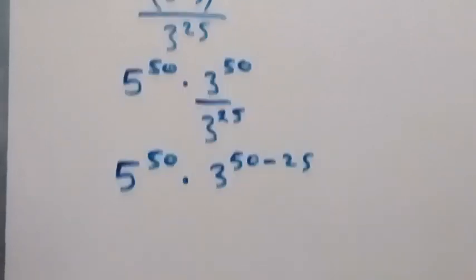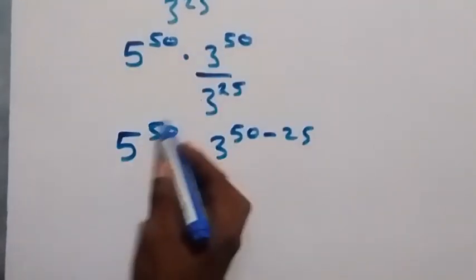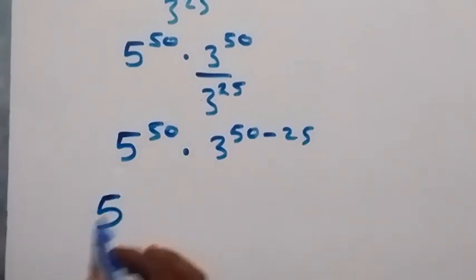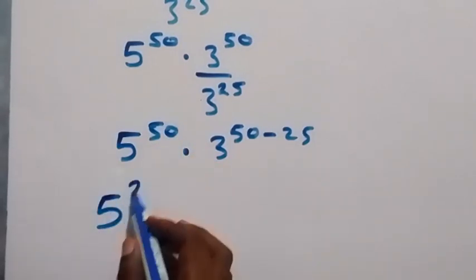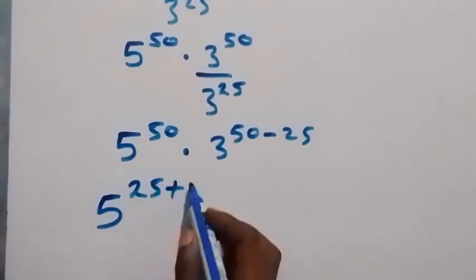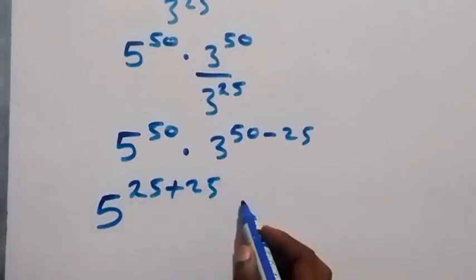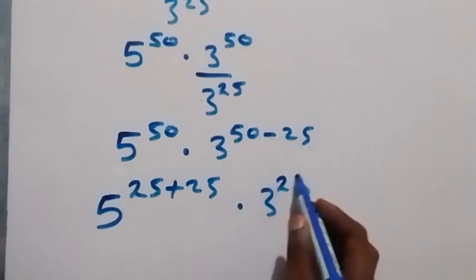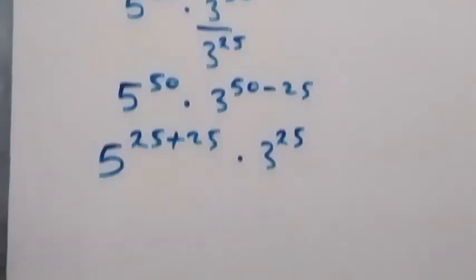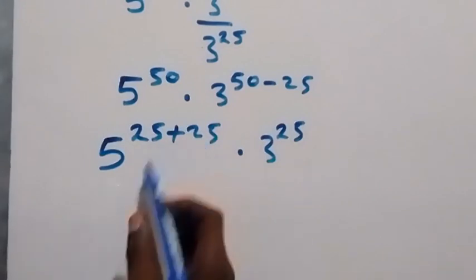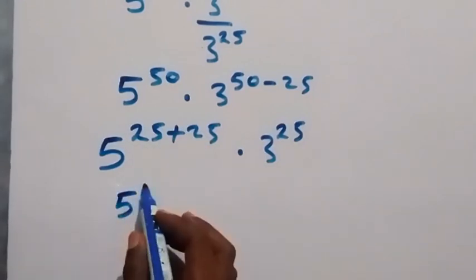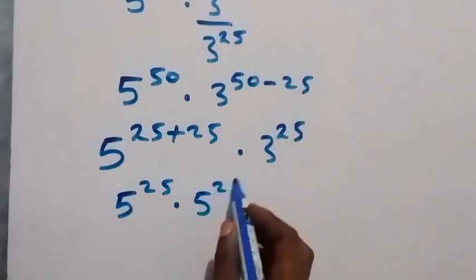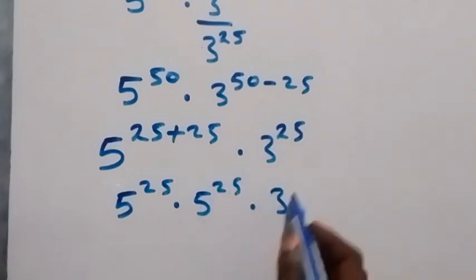Then from here also, we can separate this 50 as 25 plus 25. So we have 5 raised to the power of 25 plus 25, multiplied by 3 raised to the power of 50 minus 25, which is now 25. From the law of indices as well, we can rewrite this and say this is 5 raised to the power of 25 times 5 raised to the power of 25, then times 3 raised to the power of 25.